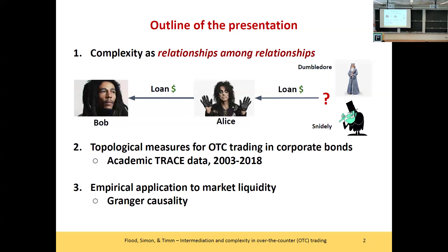We are looking for relationships between relationships as a source of complexity. This is particularly important for us in attacking complexity, because relationships between relationships can create recursive behavior, feedback effects, and spillover effects that may scale exponentially — and often in bad ways.